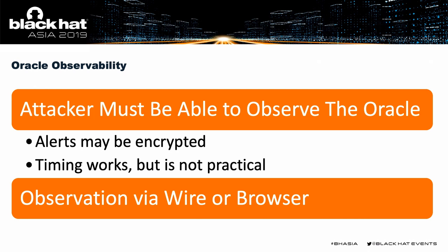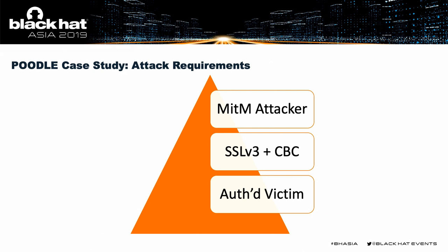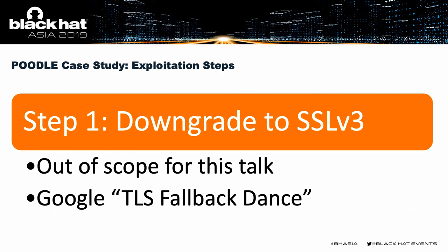To further elaborate, I'll go through the case study of how Poodle worked. The original Poodle vulnerability affects SSLv3. The requirements: you need to be a man-in-the-middle attacker, you need a server running SSLv3 with CBC mode cipher support, and you need a victim logged into the site with some authentication — sending cookies, a base64-encoded passphrase, or some other authenticated header. The first step is that the man-in-the-middle needs to downgrade the connection to SSLv3. Google 'TLS fallback dance' for more on that — it's a well-known and well-resolved problem.